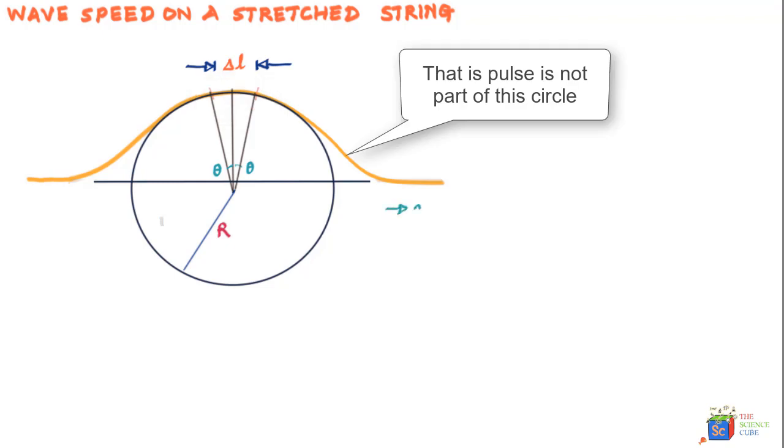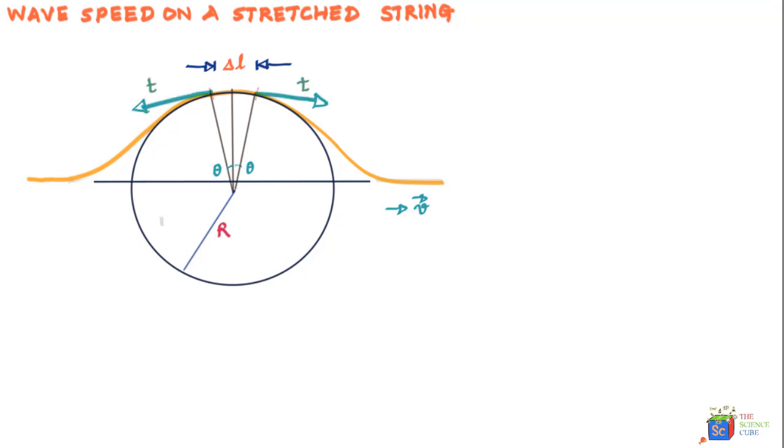The force that pulls the string would have magnitude equal to the tension T in the string. Let's assume the tension is denoted by T in the string and pulls tangentially on this element on each side. Let's show the vector representation of this tension T or the force which pulls the string in both directions.